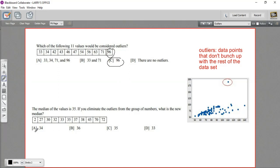All right, let's look at the second problem. It says the median of the values is 35. We've got our data set here. If you eliminate the outliers from the group of numbers, what is the new median? Let's look at this group of numbers.